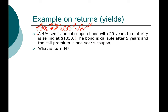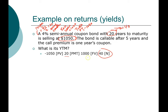First, let's compute its yield to maturity. To compute yield to maturity, we need four factors: the present value, which is the price of the bond; the coupon payment of $20; the face value; and the time to maturity. With 20 years left to maturity, we have 40 payments. The future value is always the face value or principal of the bond. Given this information, the yield to maturity turns out to be 1.82% every six months, or 3.65% per year.